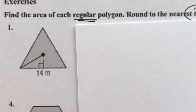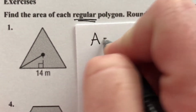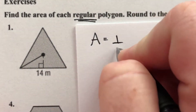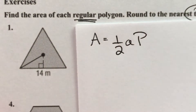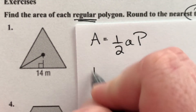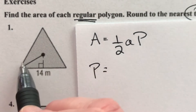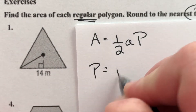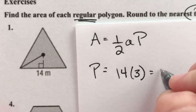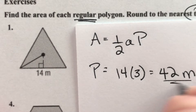For number one, the first thing we have to do for every single shape is figure out the apothem length and the perimeter. Our formula is one-half the apothem times the perimeter. First I want to figure out the perimeter — that's the easiest. I know one side is 14 and it's regular, so all sides are the same length. That's 14 times 3, which is 42 meters.